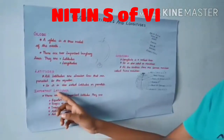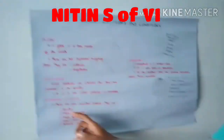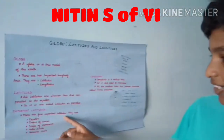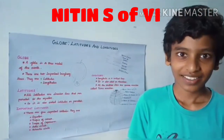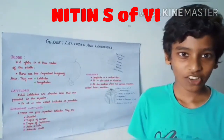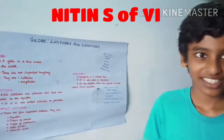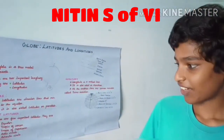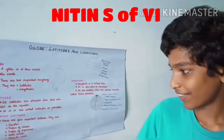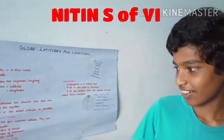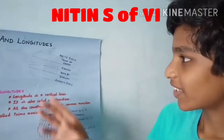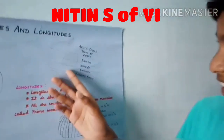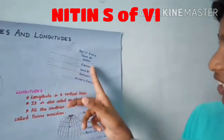Important latitudes. There are five important latitudes. They are: equator, Tropic of Cancer, Tropic of Capricorn, Antarctic Circle, and Arctic Circle.